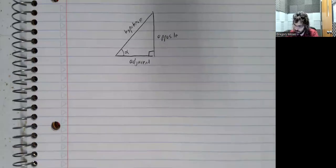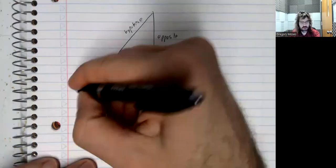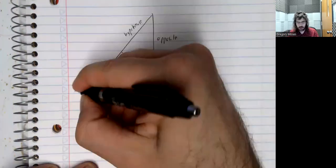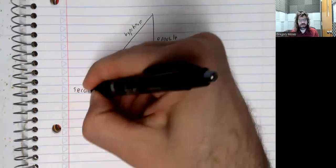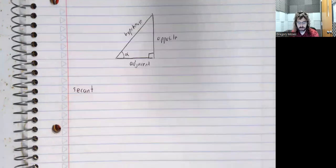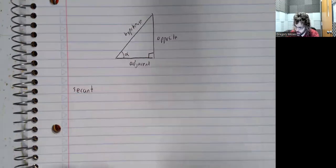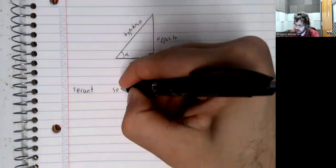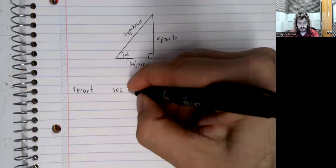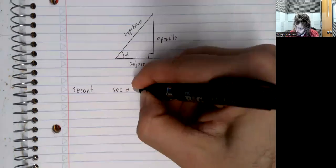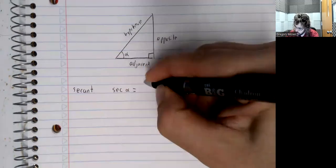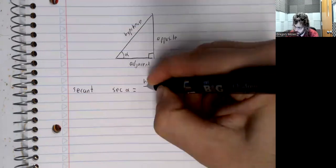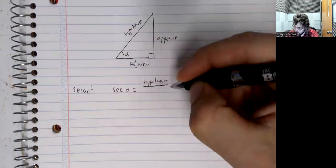In terms of hypotenuse, opposite, and adjacent, we have the secant, abbreviated sec. So the secant is the hypotenuse over the adjacent.